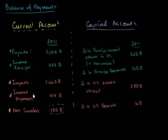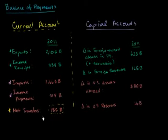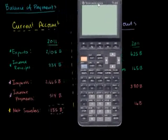We can figure out, looking at just these causes — the trade deficit, the income receipts, and the net transfers — whether the US is transferring more currency abroad or receiving more currency. To do that, let's get the calculator out.